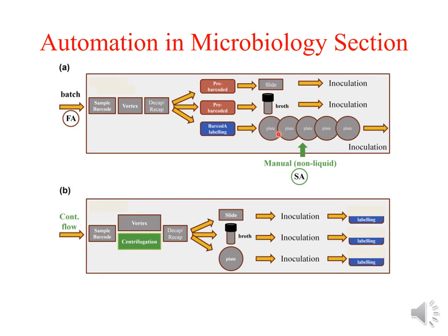Some parts may be manual — for example, in plating it may be manual. This is another type of automation in the microbiology lab where it is a continuous flow analyzer and all this is done by inoculation.